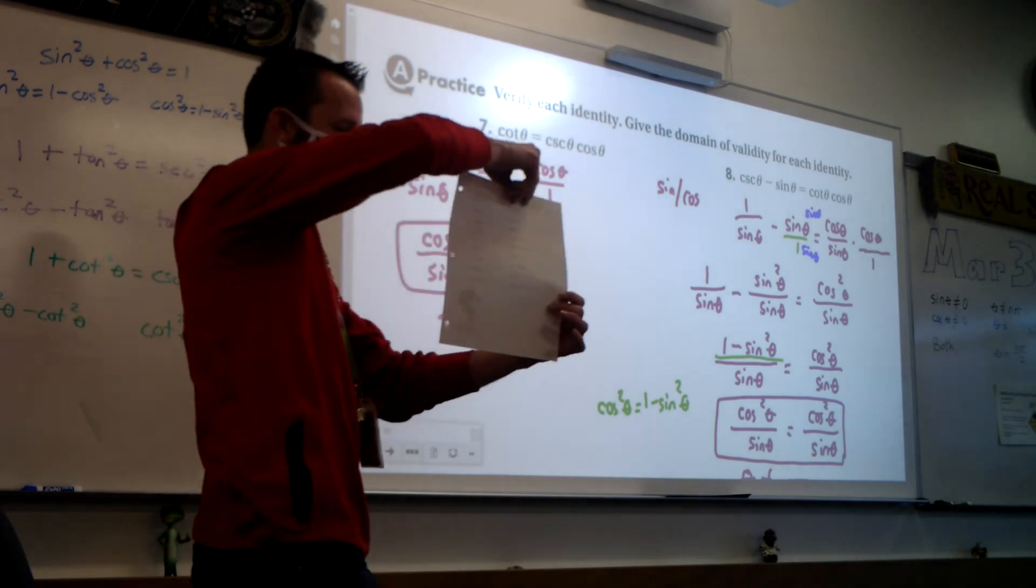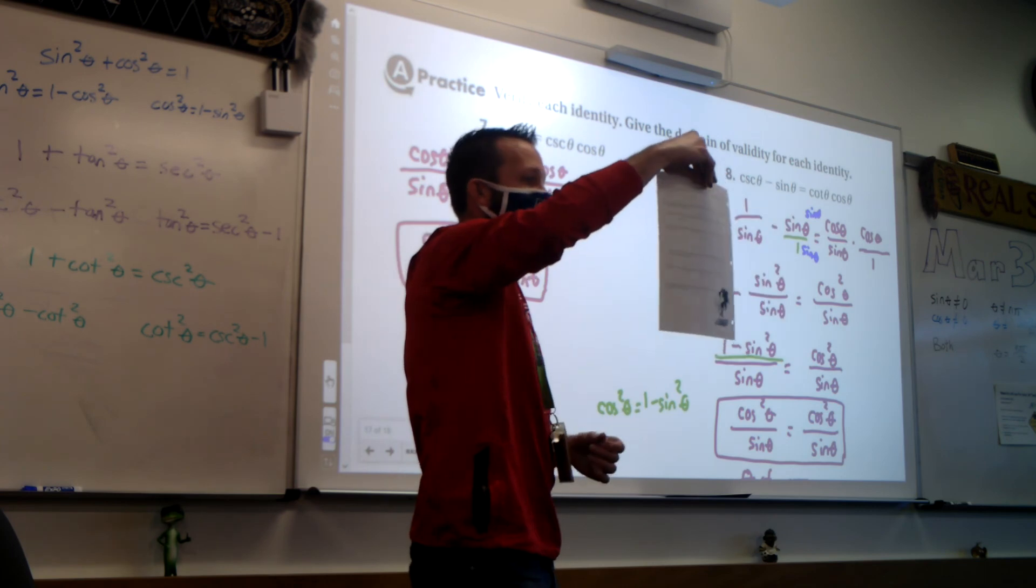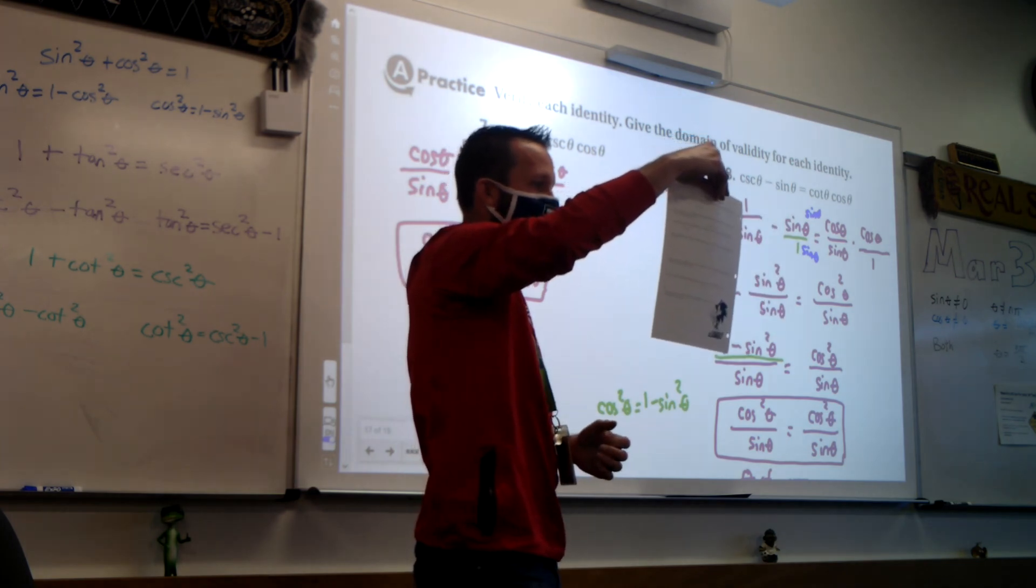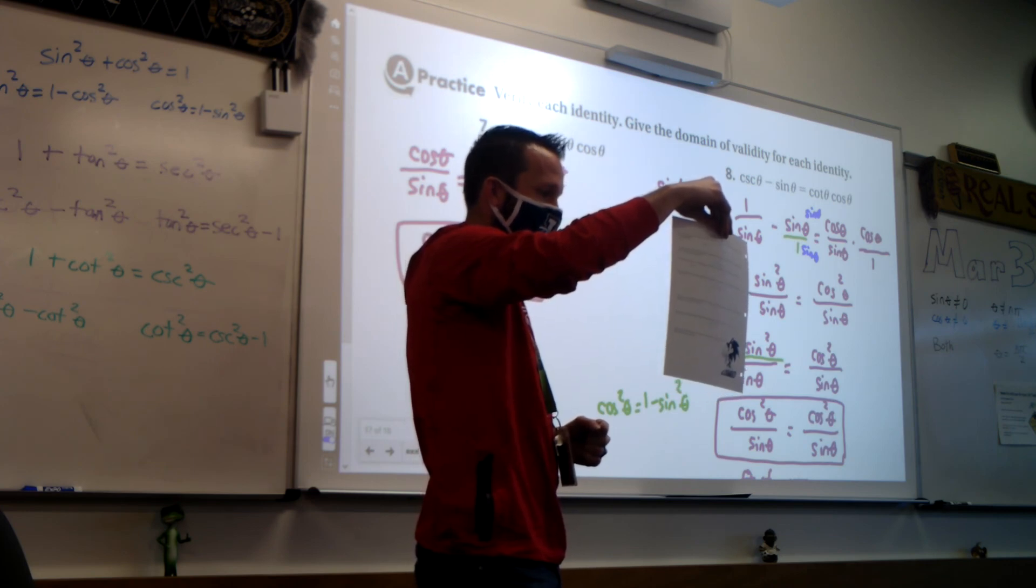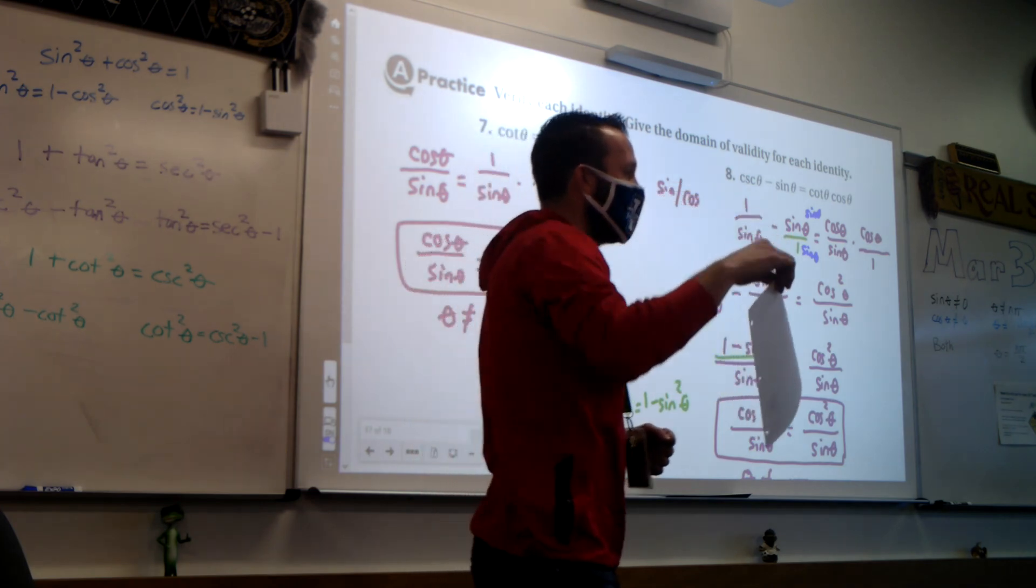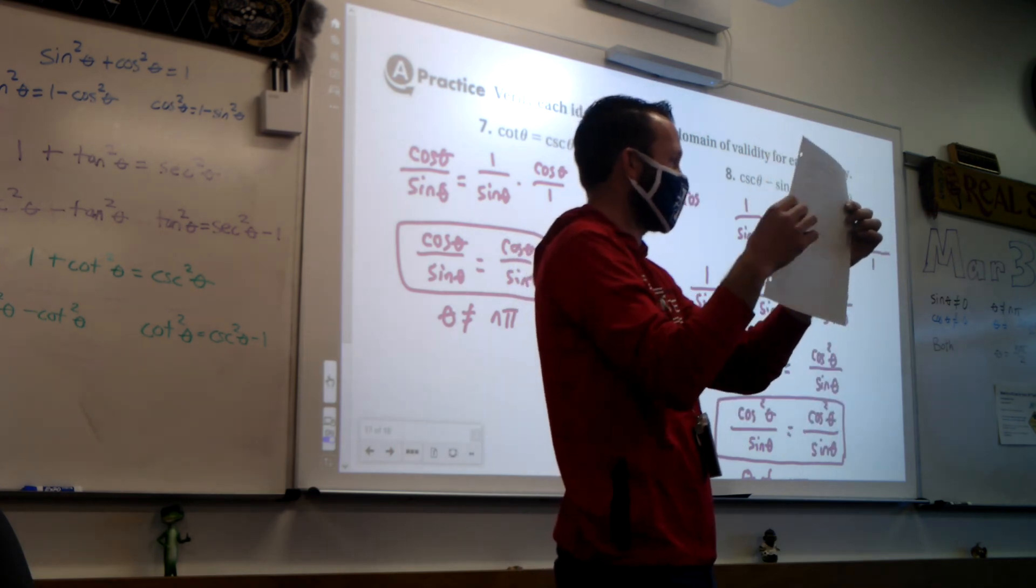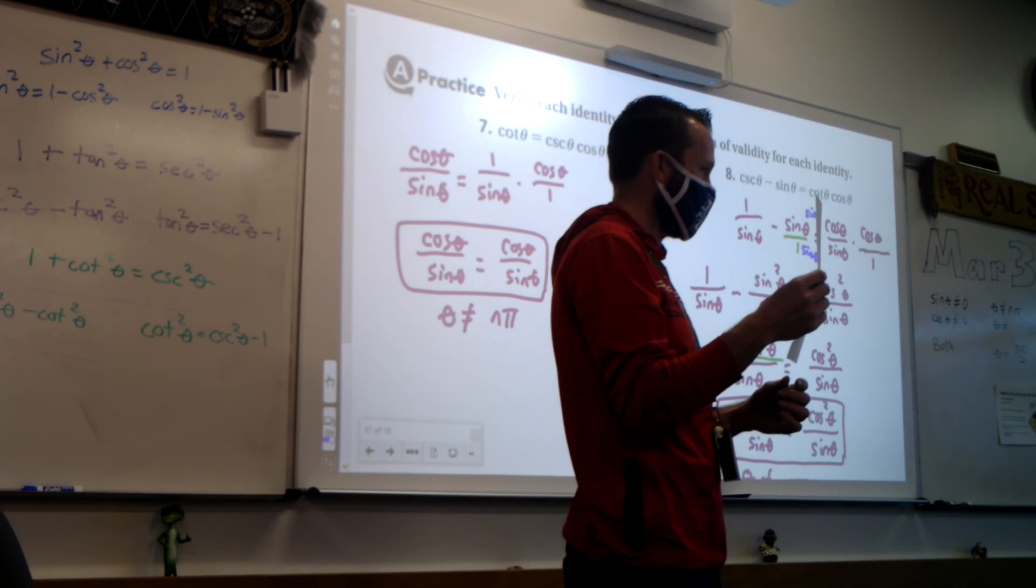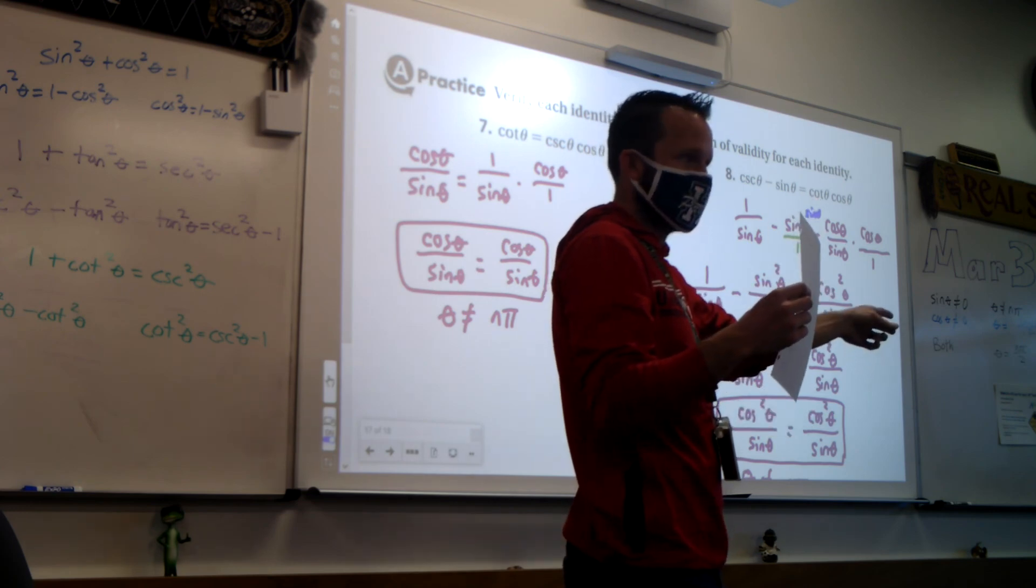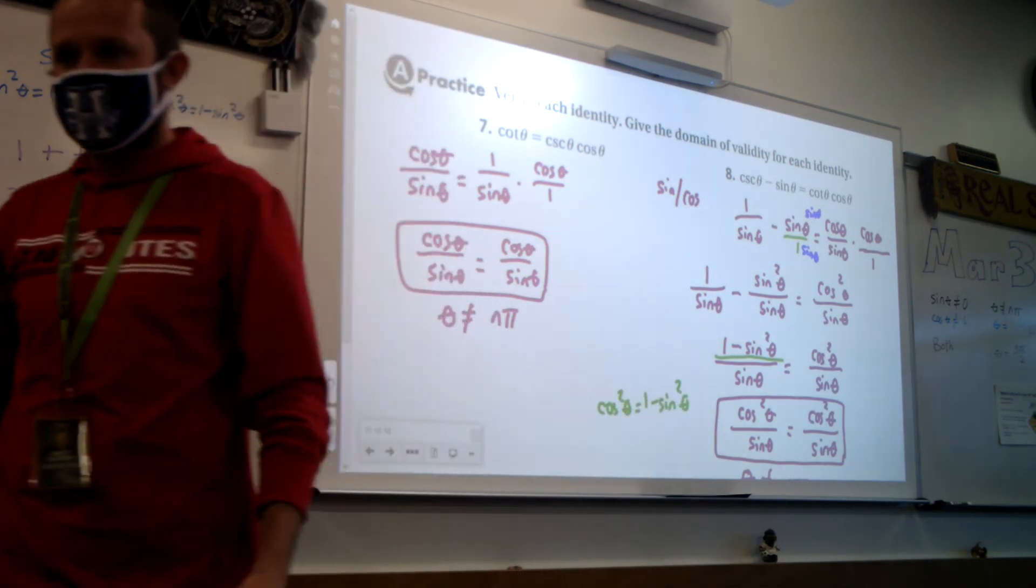So now on the back is your assignment. There's 18 trig identities. It says verify, which means get the left side to look like the right side. And then, you're going to give the domain of validity for that. Now, you're not going to have enough space to do this right here, so don't try to cram it on here. Do a separate paper. And what we're going to do on Friday is do a little bit more practice with these from home. Alright, thanks guys. You are awesome. If you'll clean up, then I will see you virtually on Friday and in person on Tuesday. Bye-bye.